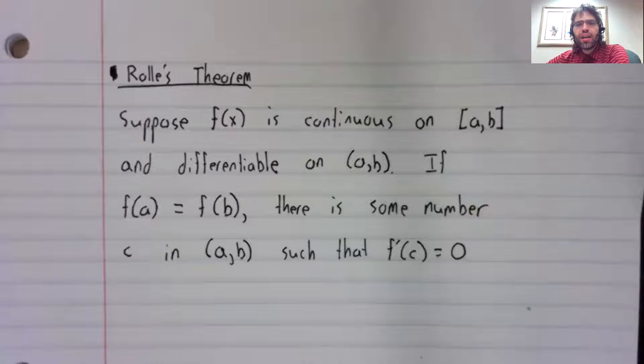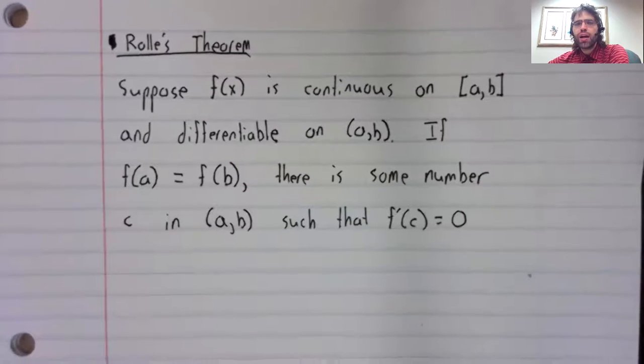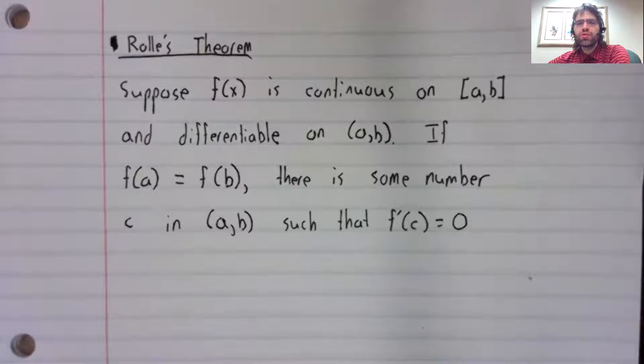If f(a) equals f(b), there is some number c in the open interval, such that f prime of c equals zero.